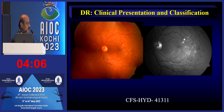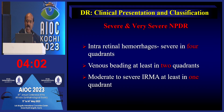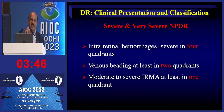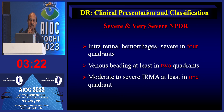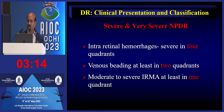To summarize staging of severe non-proliferative diabetic retinopathy: if there are more than 20 intraretinal hemorrhages in at least one quadrant, or venous beading in at least two quadrants, or moderate to severe IRMA in at least one quadrant — if any one of these is present, it is severe NPDR. If two are present, it is very severe NPDR. This is the 4-2-1 rule and is very simple to apply in the clinic.